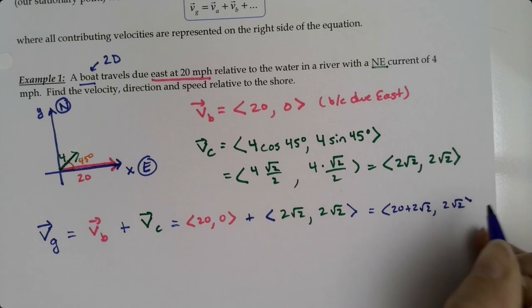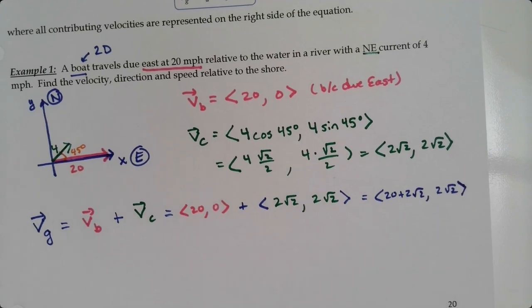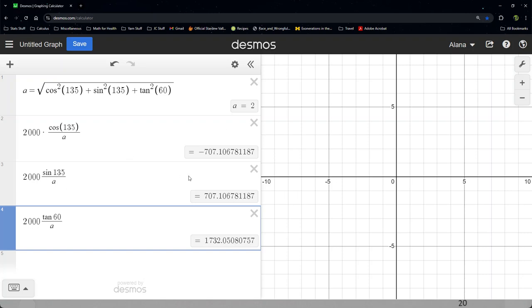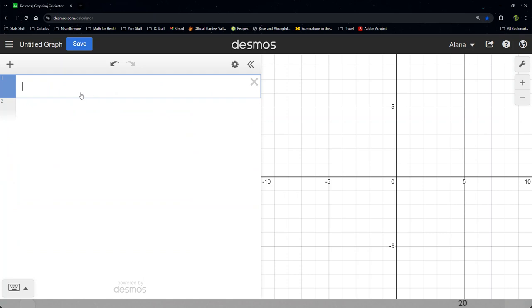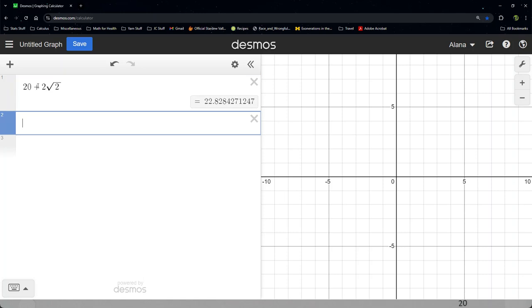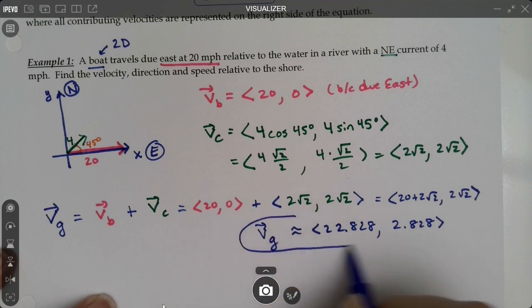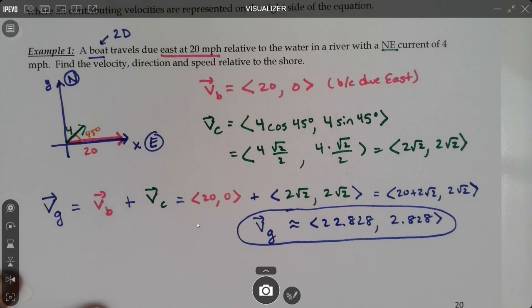This will be 20 plus 2√2 and 2√2. Let's find some decimal approximations so we have a better sense of it. That is 22.828 and 2.828 miles per hour. There's the velocity with respect to the ground. Speed is actually really easy to find. Speed is just the magnitude of the velocity.